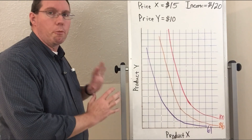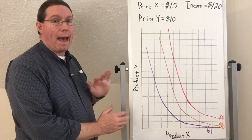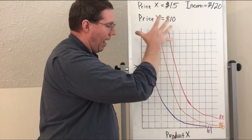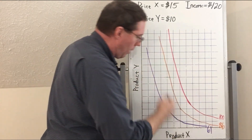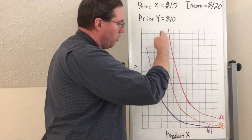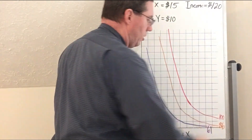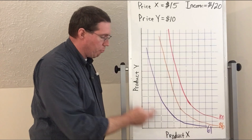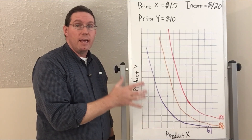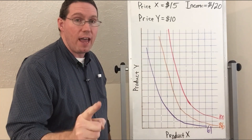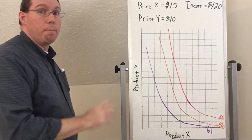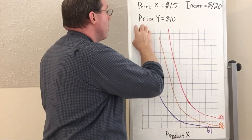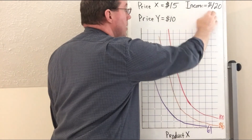This is a typical problem I'd give you to maximize utility. I give you a coordinate plane with product X and product Y, and it has some indifference curves on it. The purple indifference curve gives a utility of 61, the orange one gives 86, and the red one gives 100. What quantity of product X and product Y would this person need to consume to maximize their utility given their budget constraint? The budget constraint is given: price of X is $15, price of Y is $10, and income is $120.